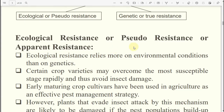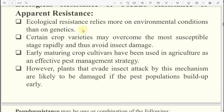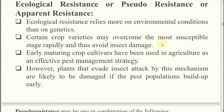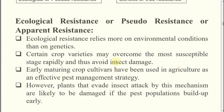In ecological resistance (pseudo or apparent resistance), the resistance relies more on environmental conditions. Certain crop varieties may overcome the most susceptible stage rapidly, thus avoiding insect damage. Early maturing crop cultivars have been used in agriculture as an effective pest management. However, plants that evade insect attack by this mechanism are likely to be damaged if the pest population builds up yearly, because if the pest is there every time when the plant is susceptible, they may not escape.